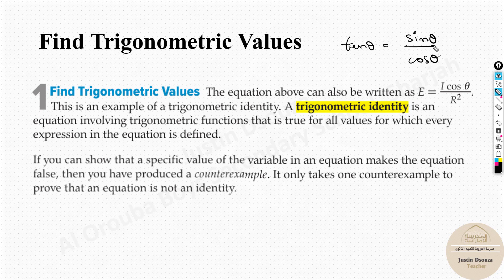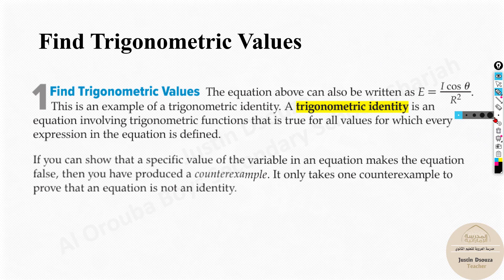Now, since we have a rational function, the denominator cannot equal zero. So θ cannot be whatever value makes cos θ equal zero — that is 90°, 270°, and so on. But for all other values, this is an identity. If you provide even a single counterexample where both sides are not equal, the identity is proven false — that equation is not an identity.